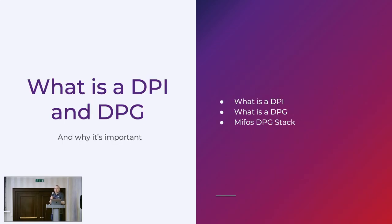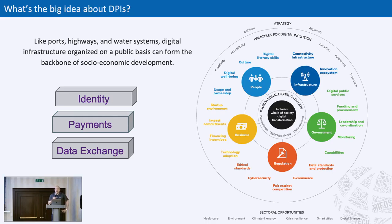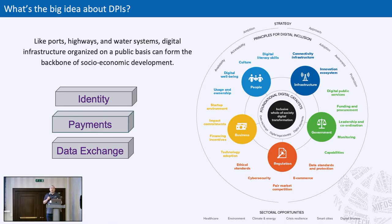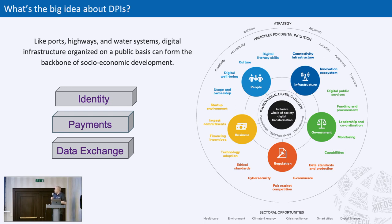First of all, what is a DPI and a DPG? Three-letter acronyms are great and lots of people have different definitions. DPI is Digital Public Infrastructure. The easiest way to think about this is to think about normal infrastructure — your highways, water systems, electricity networks, national grids. These are public systems that are there to generate socioeconomic growth. It's exactly the same in the digital space. The core areas identified are identity, payments, and data exchange. Through those common public systems, services can be layered on top.